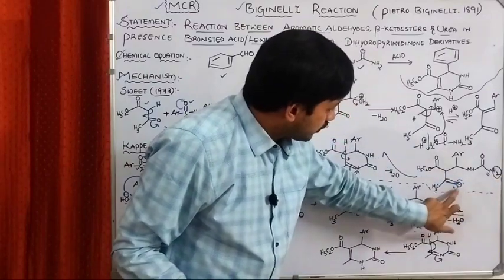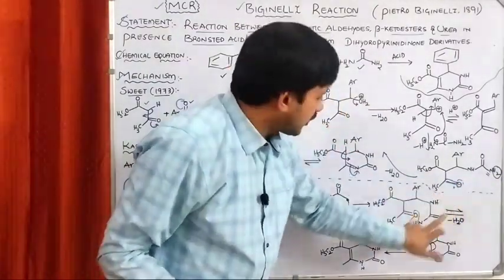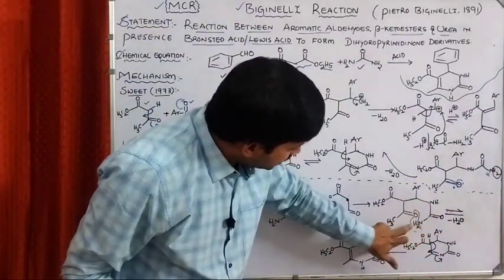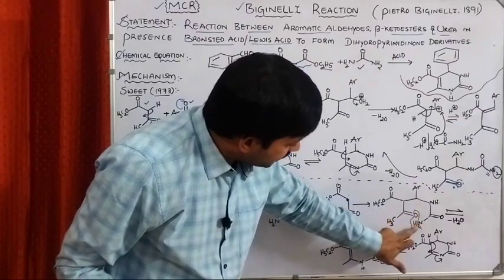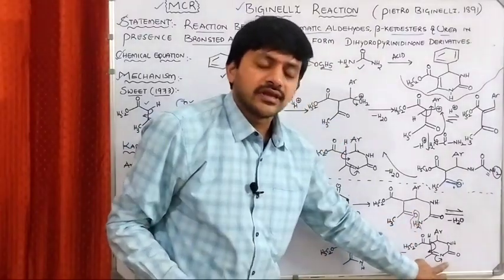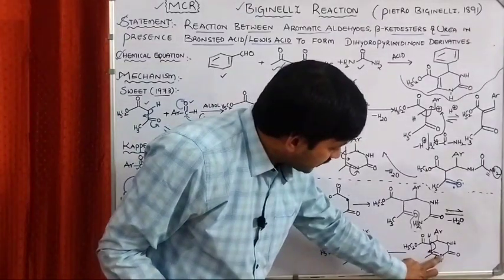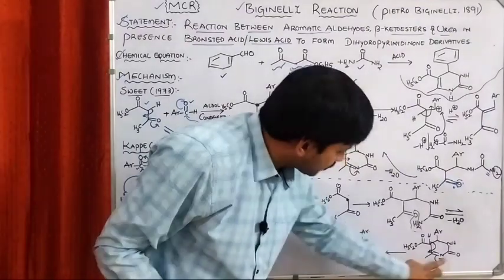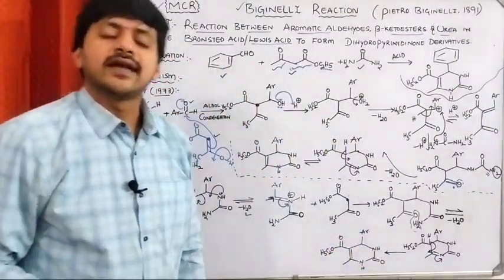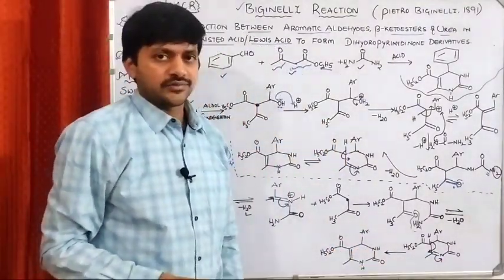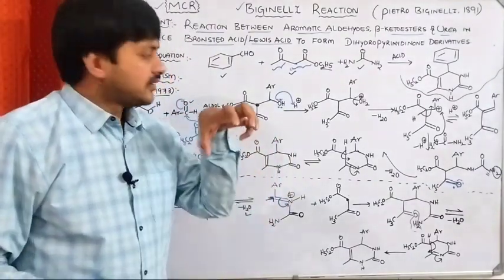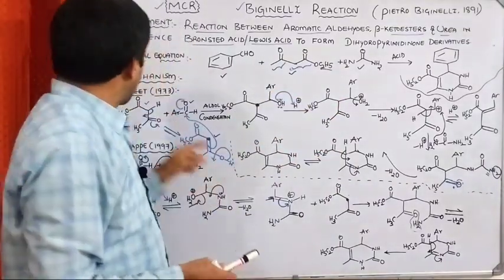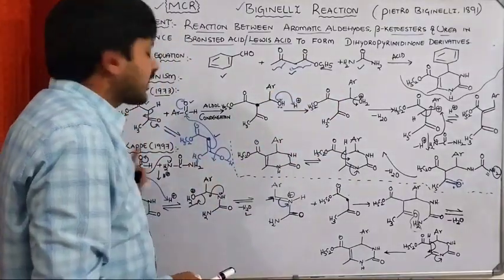Elimination of H2O takes place: from the keto group, oxygen is eliminated, and from nitrogen, H is eliminated. Thereby we come up with a cyclic ring. In the cyclic ring, we observe the nitrogen-carbon pi bond — C=N. Now a proton transfer takes place from the carbon to nitrogen. Thereby we come up with the dihydropyrimidinone derivative. In this way we can identify the formation of the dihydropyrimidinone derivatives according to both the Sweet mechanism and the Kappe mechanism.